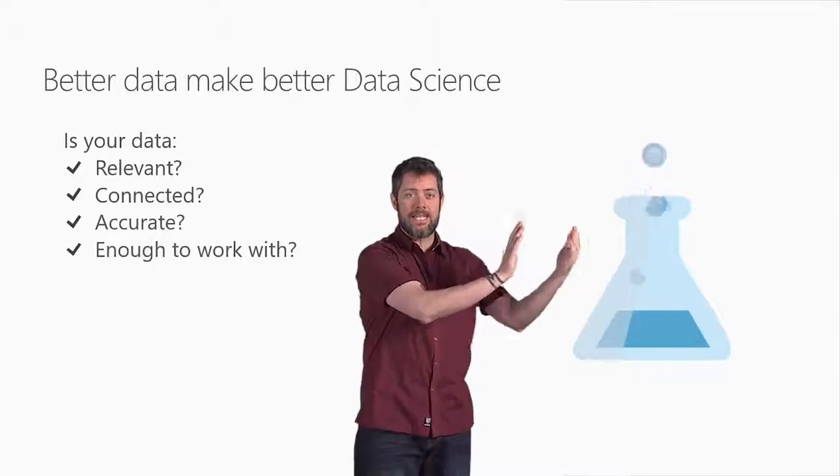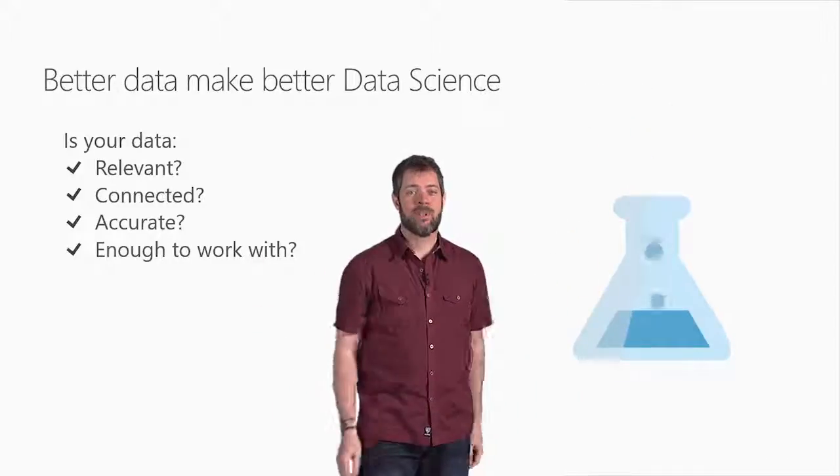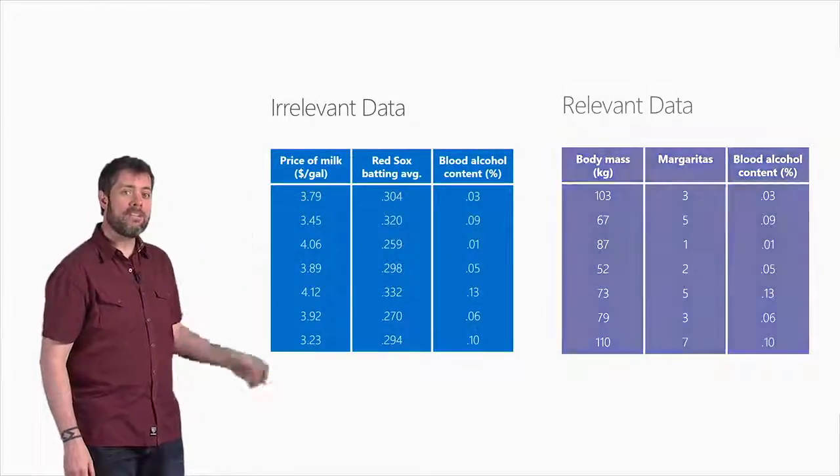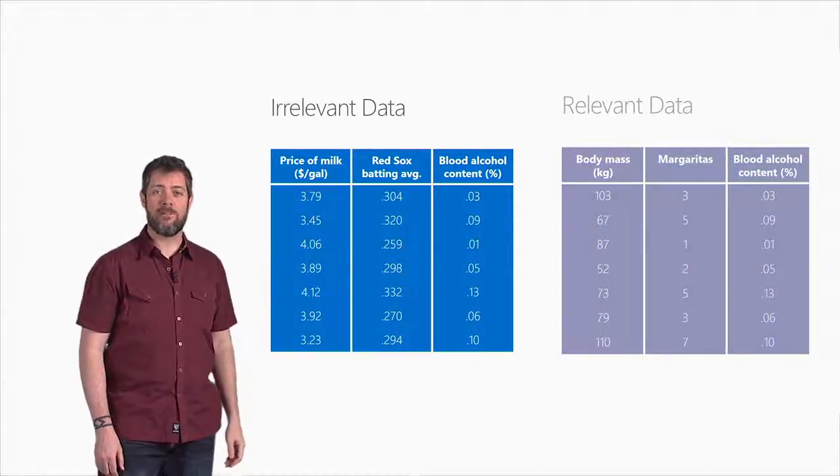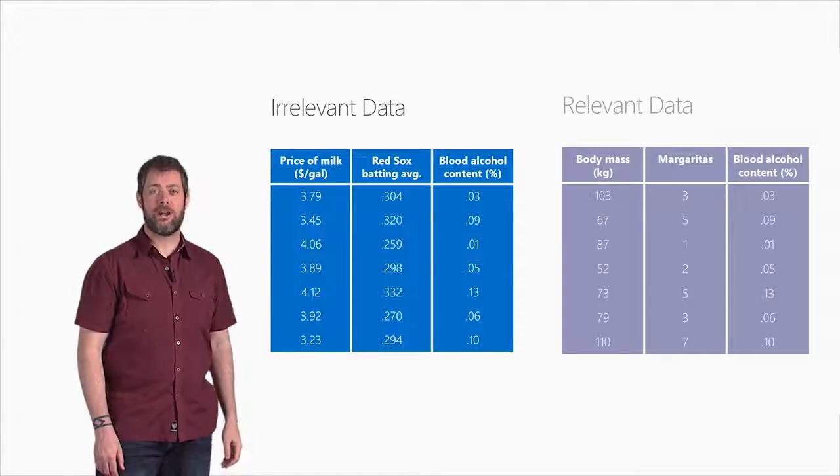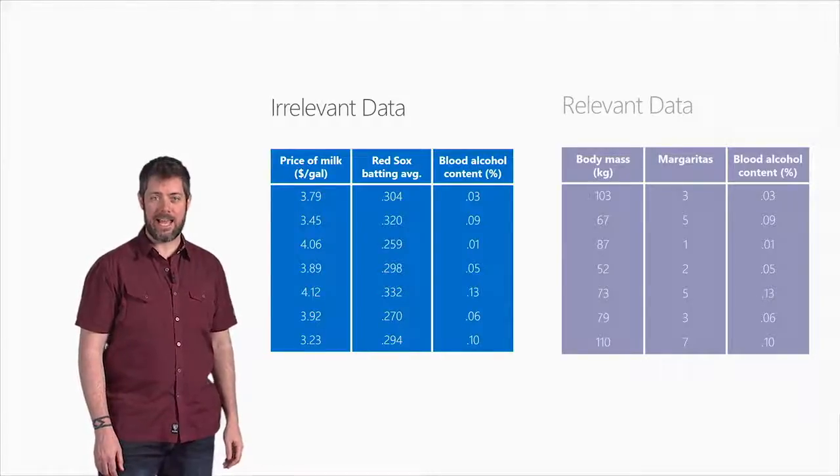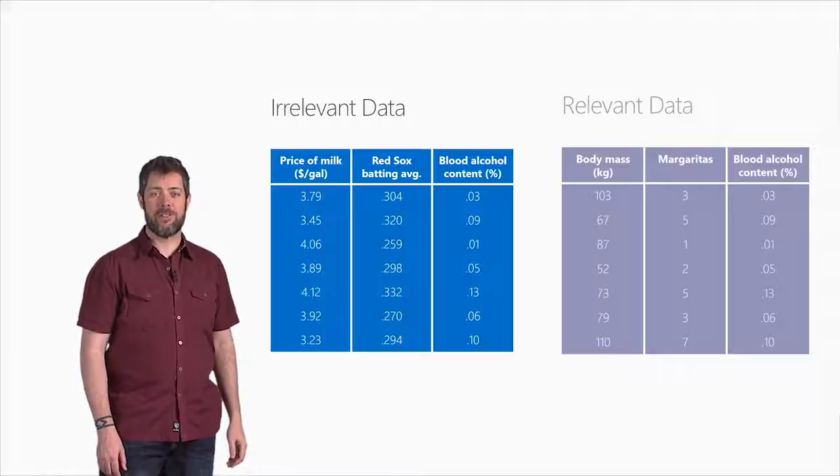So the first ingredient we need, data that's relevant. Take a look at the table on the left. We met seven people outside of bars in Boston and measured their blood alcohol level, the Red Sox batting average in their last game, and the price of milk in the nearest convenience store.